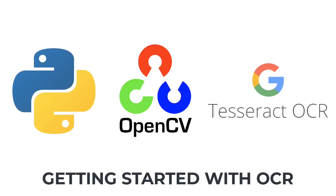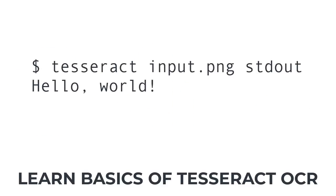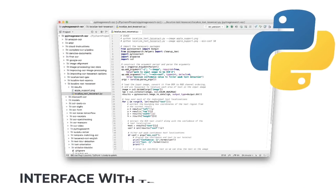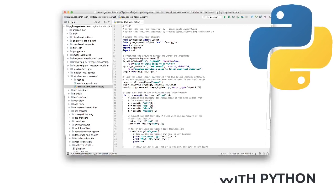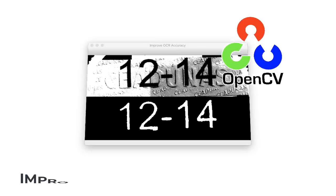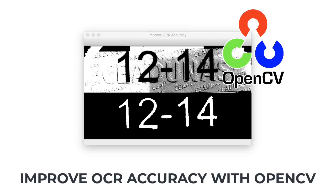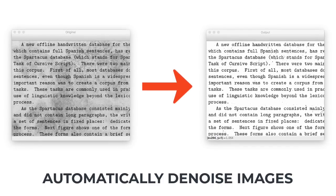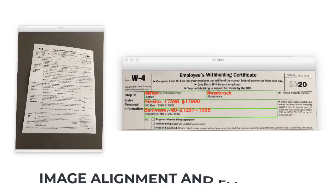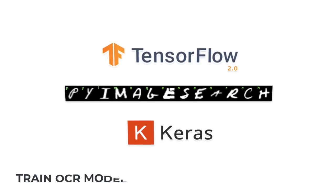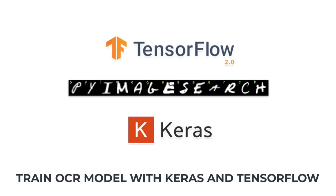Inside this book, we will focus on getting started with OCR, learning the basics of the Tesseract OCR engine, discovering how to improve OCR accuracy using Tesseract options and configurations, interfacing with Tesseract via the Python programming language, localizing and detecting text in images using both OpenCV and Tesseract, using OpenCV and image processing techniques to improve OCR accuracy, using machine learning to denoise our images for better OCR accuracy, and document registration and alignment to build an invoice, receipt, and form scanning project.